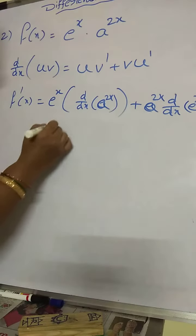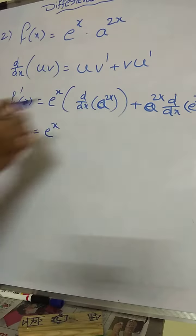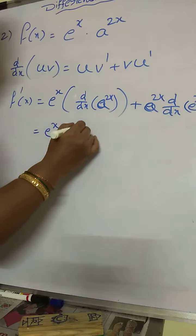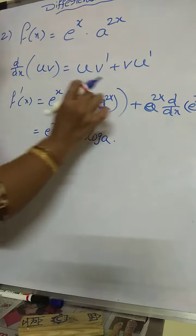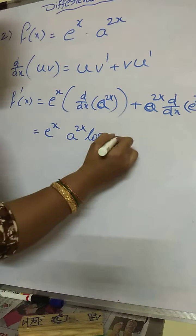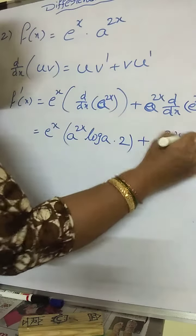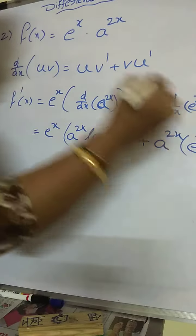Now see e power x into a power 2x. See a power x formula like that. a power x formula is a power x into log a, means a power 2x into log a. In the upper here 2x is there. 2x variable is 2x derivative is 2. Plus a power 2x into d by dx of e power x is e power x only.